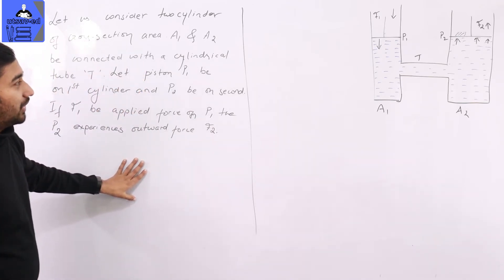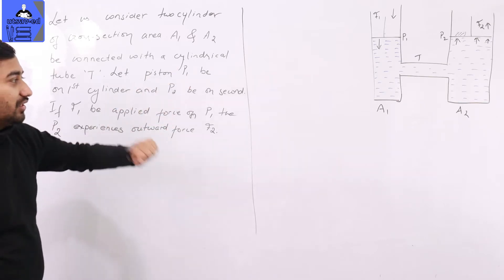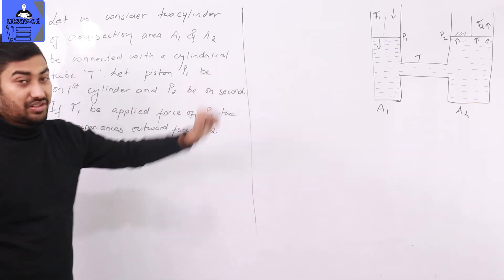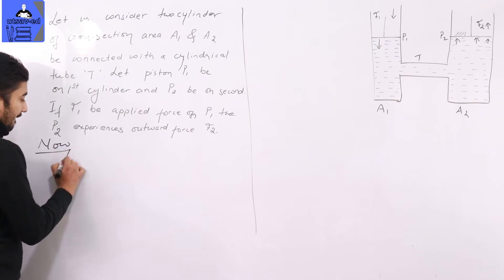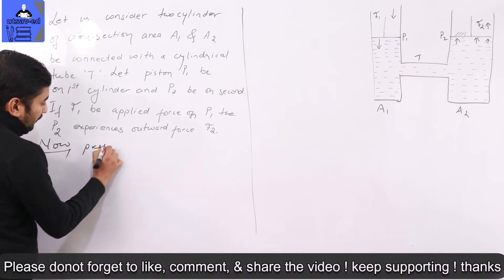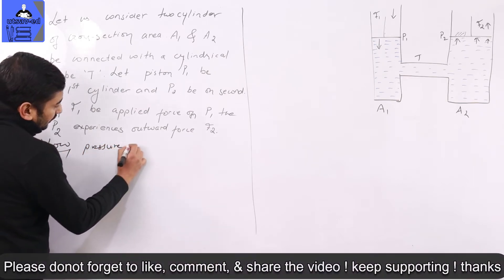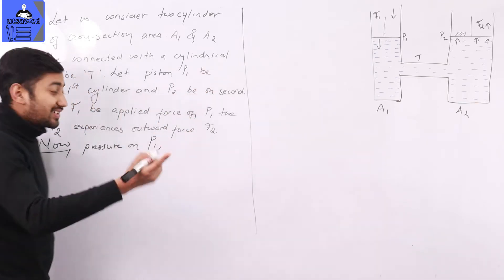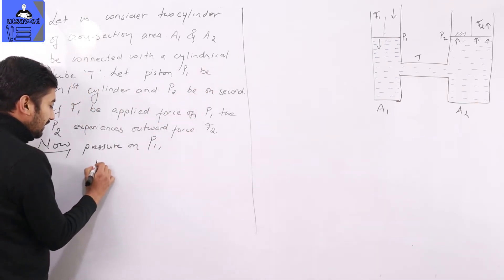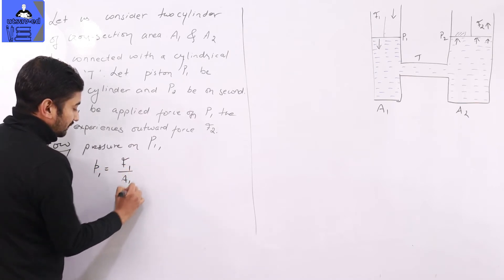So let's define the pressure on the first piston. Pressure on piston P1: capital P1 is equal to force F1 divided by area A1.